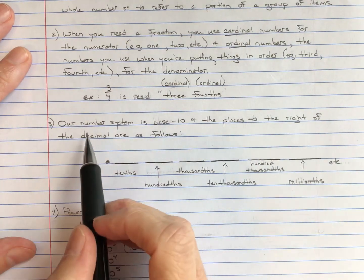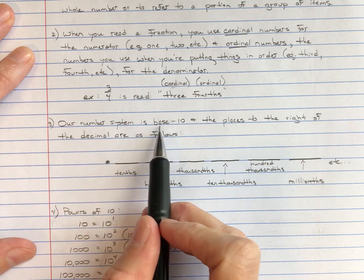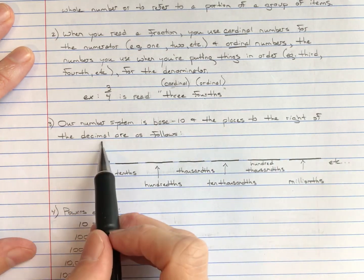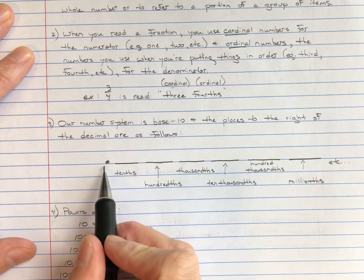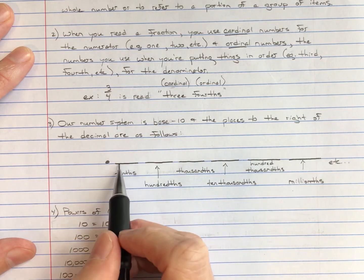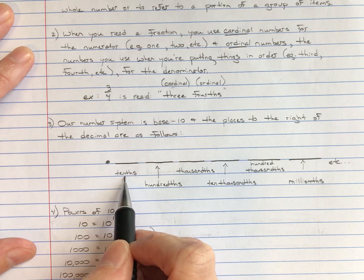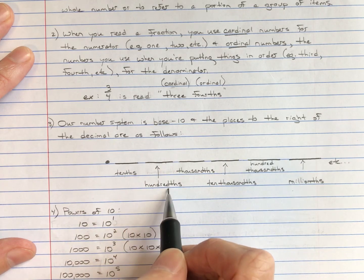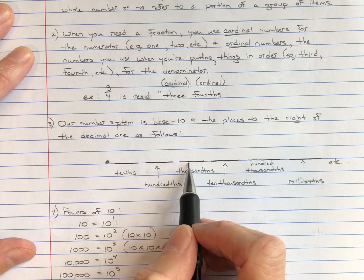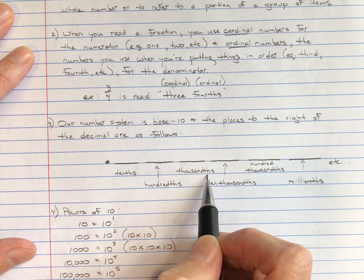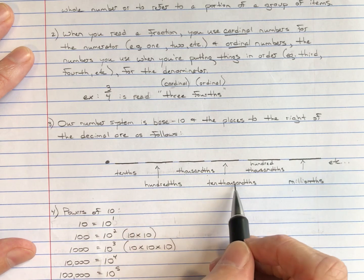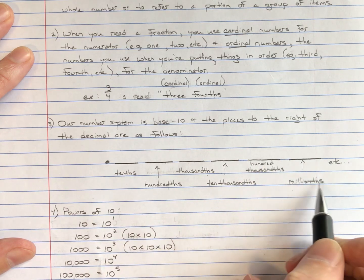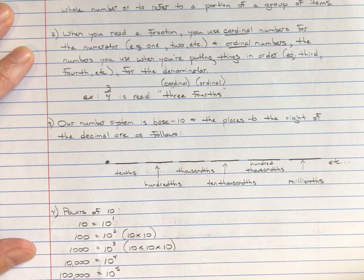We know two more things. We know that our number system is base 10, and the places to the right of the decimal are as follows. The first place to the right is tenths. The second place to the right is the hundredths place. The third place to the right is thousandths. And then you have ten-thousandths, hundred-thousandths, millionths, and then it just continues.